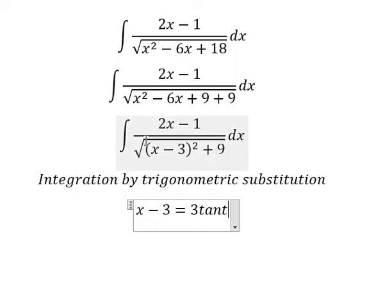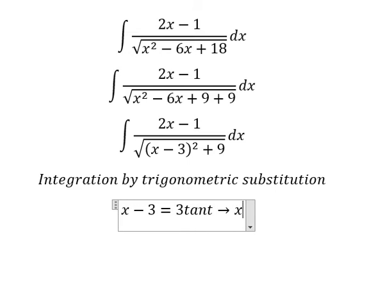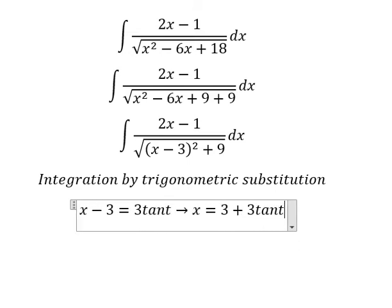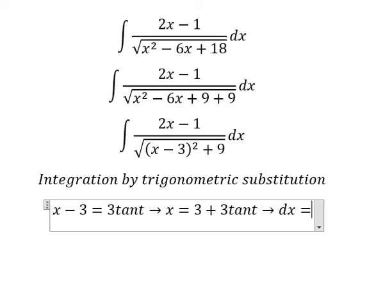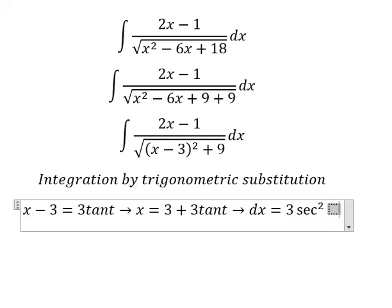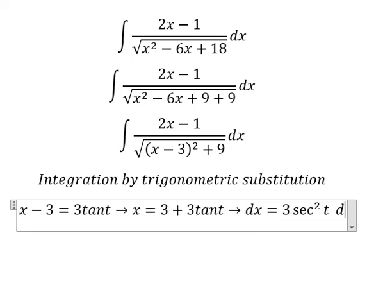Then we simplify by taking the square root. Because we still have s here, we move the negative number 3 to the right. We take the first derivative of both sides, giving us ds equals 3 sec²(t) dt.